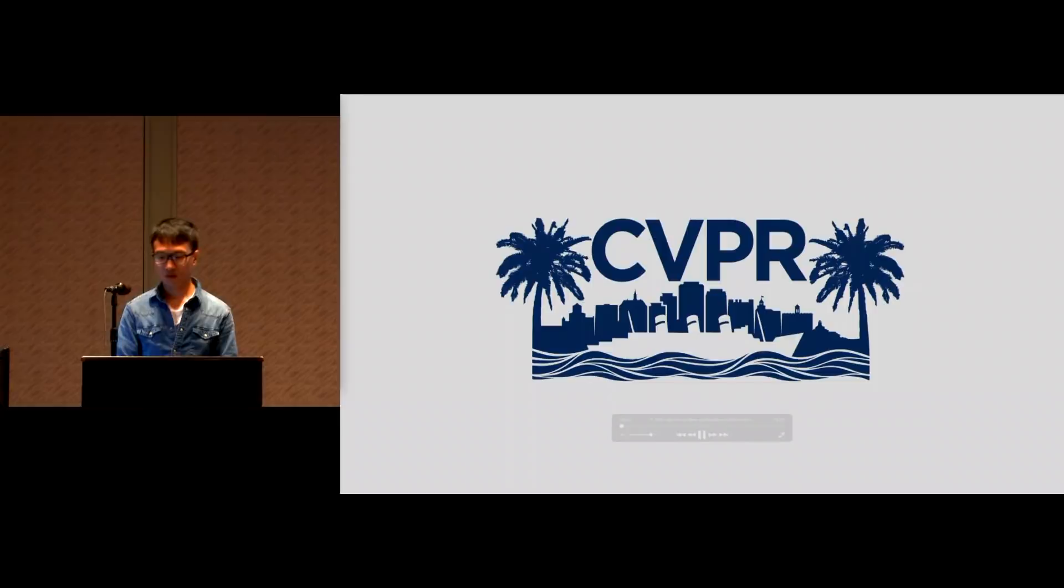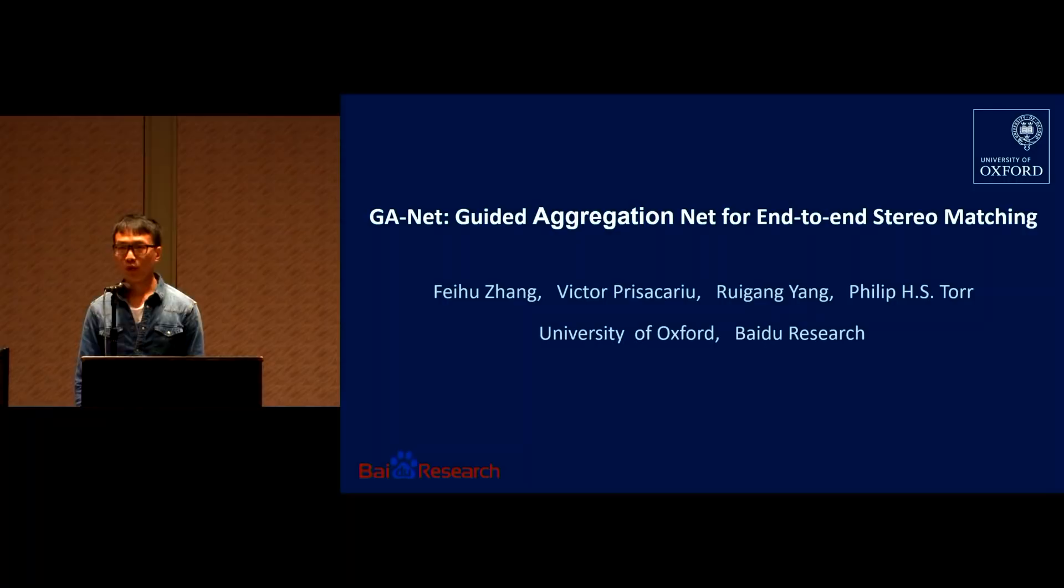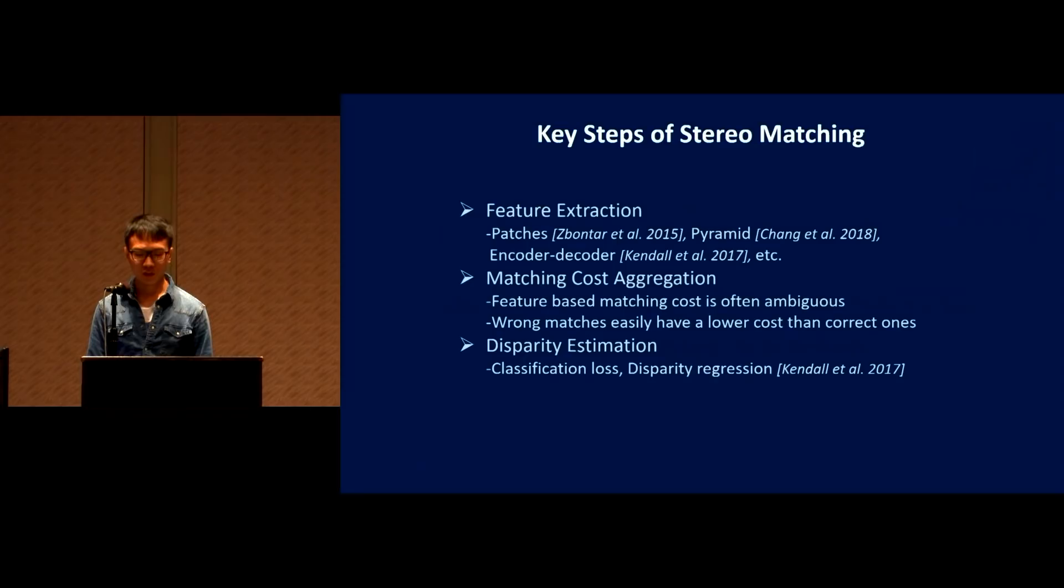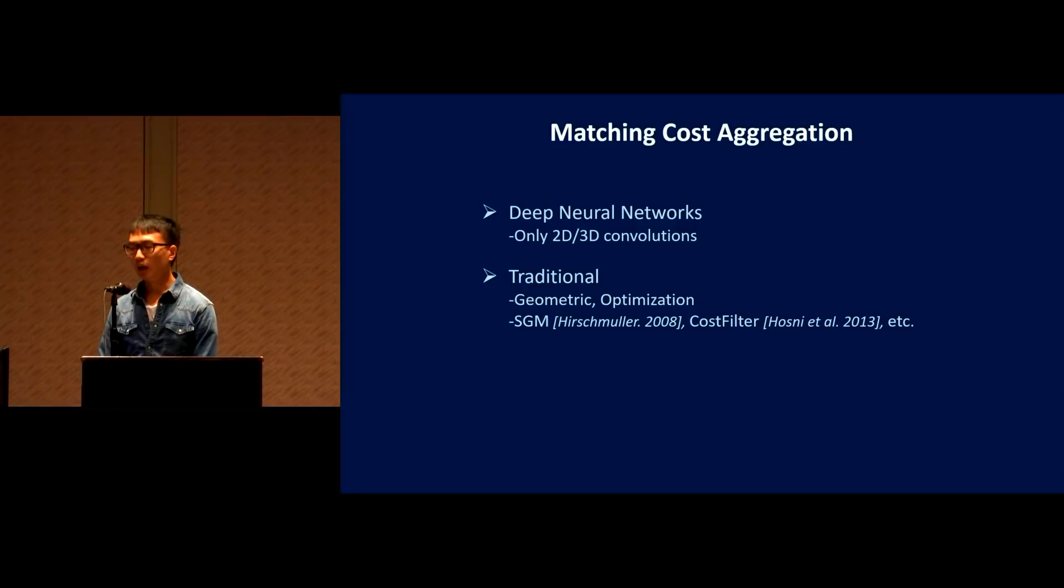Hello, everyone. This is the presentation of our paper, Guided Aggregation Net for End-to-End Stereo Matching. The project is a cooperation between the University of Oxford and Baidu Research. For stereo matching, there are three key steps: feature extraction, matching cost aggregation, and disparity estimation. We focus on the matching cost aggregation because there are already many effective methods for feature extraction and disparity estimation. But the feature-based matching cost is often ambiguous and produces a lot of wrong matches.